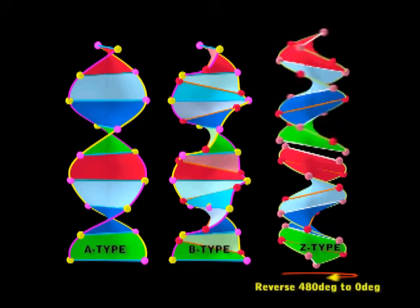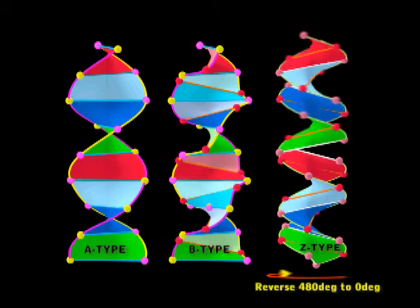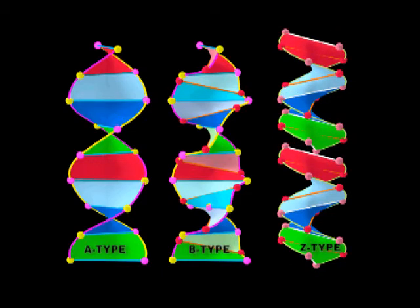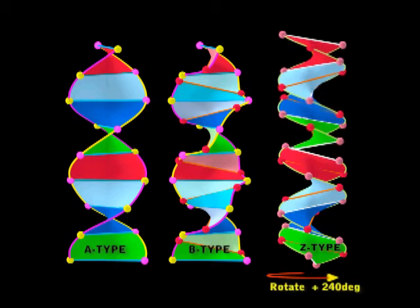Now I'm going to reverse Z back to where we were again, because I've got something interesting to show you. We had to go minus 480 to line Z up. But look when we rotate 240 positive.